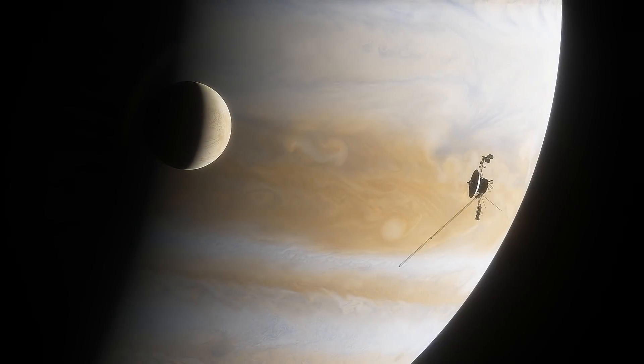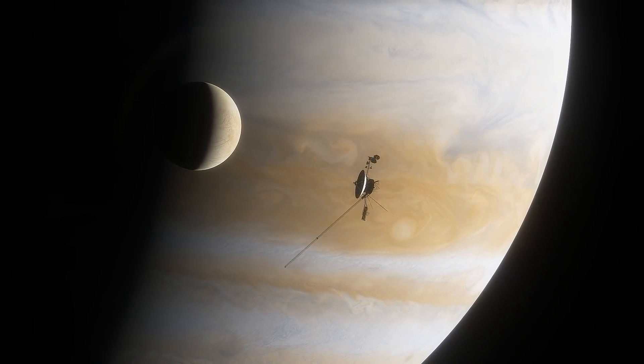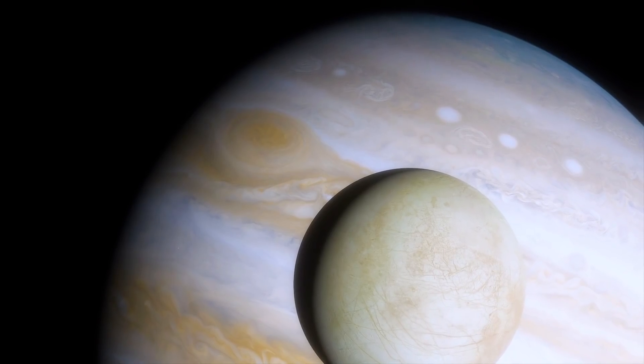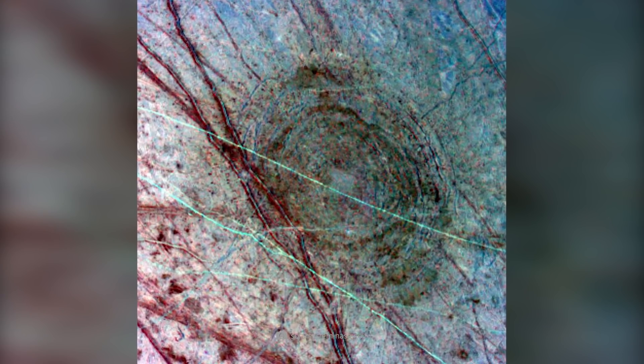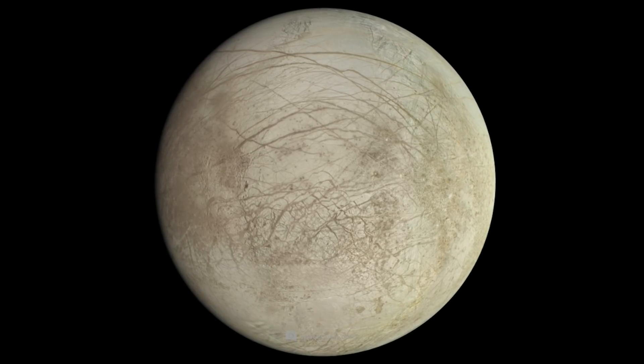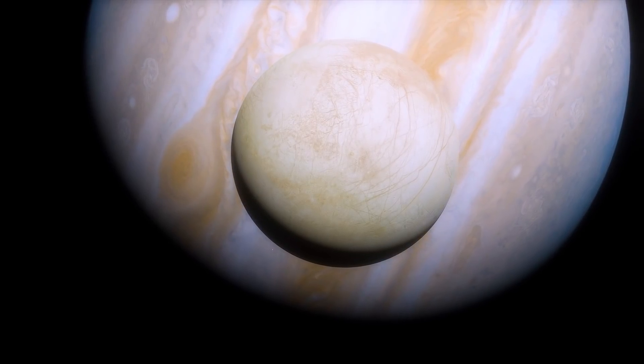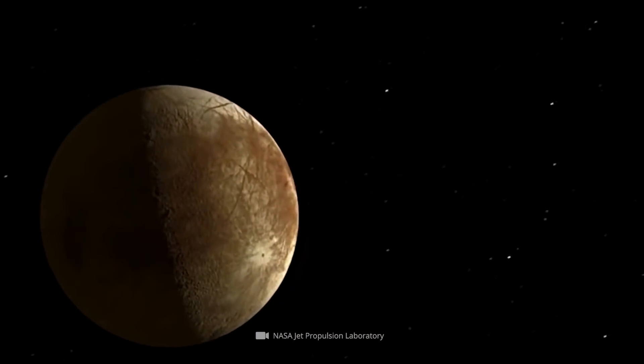So far, researchers have been able to locate just 41 impact sites on the outer surface of the celestial body. The largest of all known impact sites, the crater Taliesin, has a diameter of about 31 miles. The low crater density on Europa suggests that the surface of the moon regularly renews itself in the course of natural processes, or is geologically still very young.